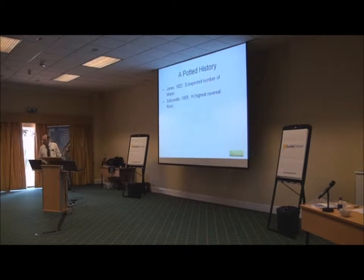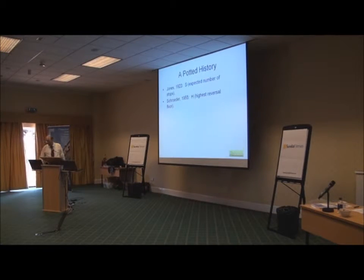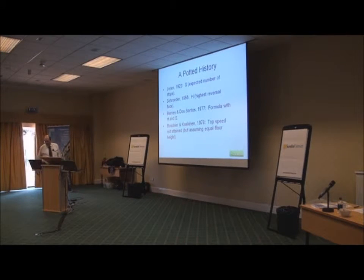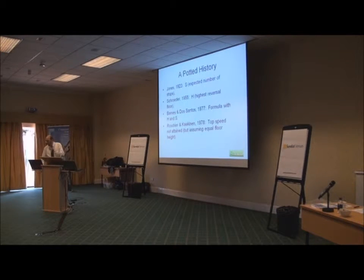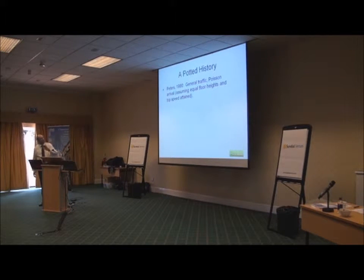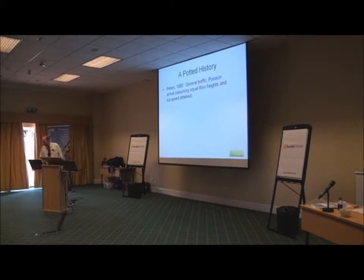In 1955, Schroeder came up with H, the highest reversal floor — recognizing we don't always go to floor N, which makes sense. In 1977 came the basic formula — for me a seminal paper, a supplement to Elevator World, from two gentlemen from Coney. It tackled the idea of top speed not attained, still assuming equal floor heights and equal floor populations. Peters then addressed the Poisson issue: he had a round-trip time equation assuming equal floor heights and top speed attained, but with a Poisson arrival process, giving a slight difference.